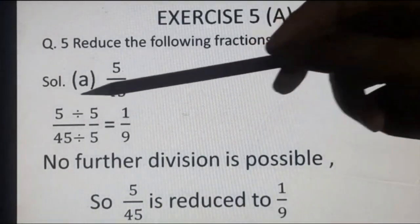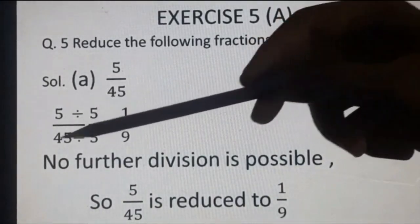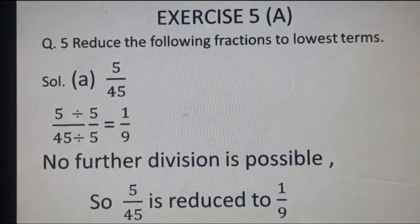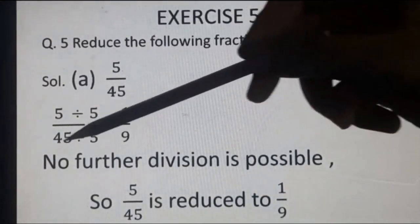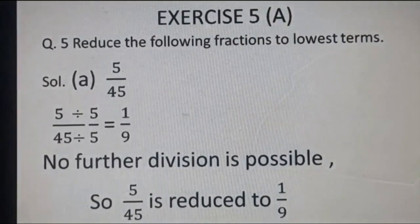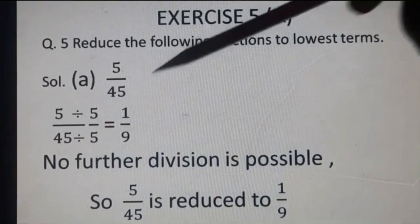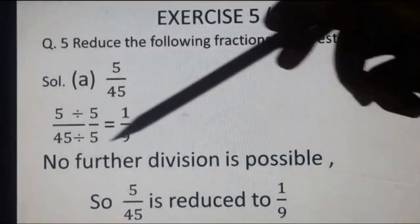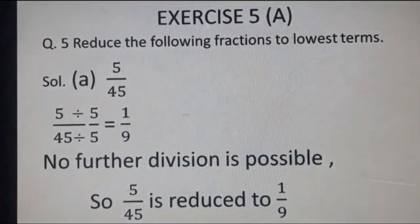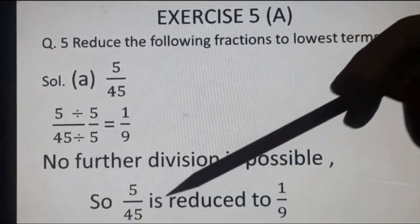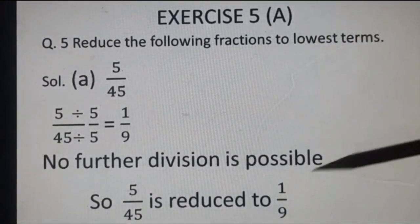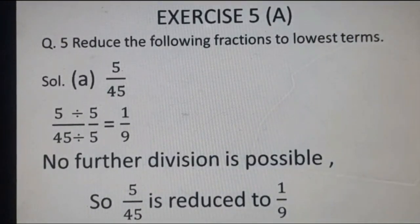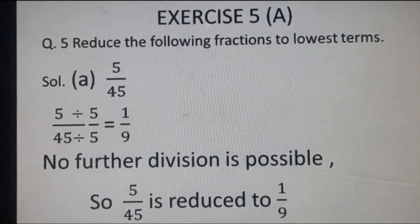We will divide: numerator divided by 5, denominator divided by 5. 5 divided by 5 gives quotient 1; 45 divided by 5 gives quotient 9. Now 1 upon 9 — no further division is possible. So 5 upon 45 is reduced to 1 upon 9. We have to select the number which divides both numerator and denominator together.